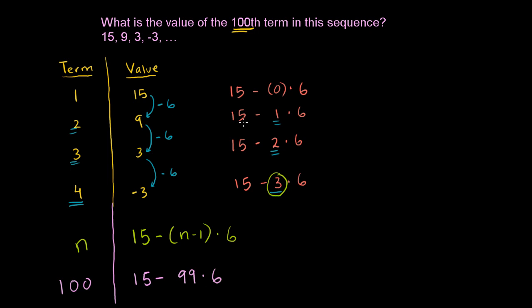1, you had a 0 here. 2, you had a 1 here. 3, you had a 2 here. 100, you're going to have a 99 here. So let's just calculate what this is.